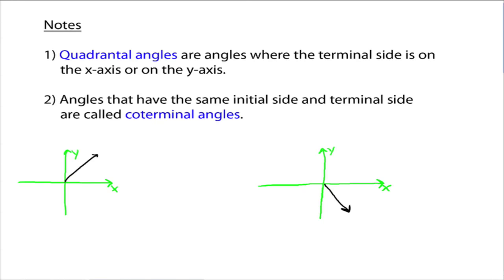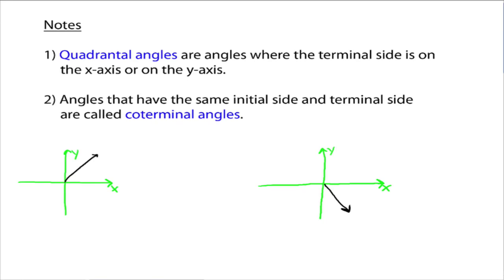A couple more notes. Quadrantal angles are angles where the terminal side is on the x-axis or the y-axis. So that's going to be like 90 degrees, 180 degrees, and 270 degrees. If your terminal side ends on the x-axis or the y-axis, they just have this fancy name called quadrantal angles.